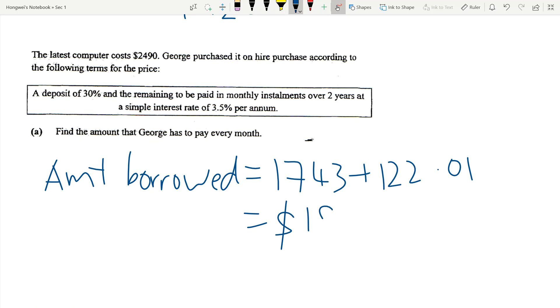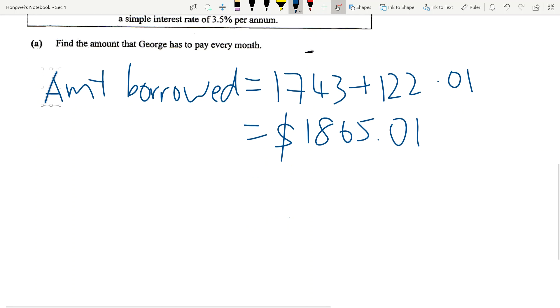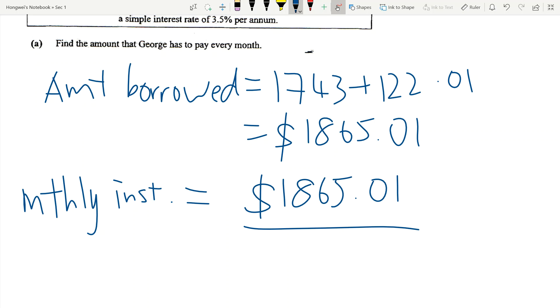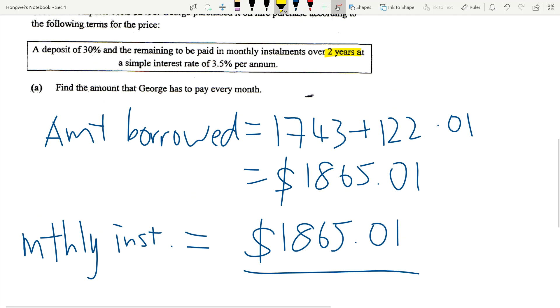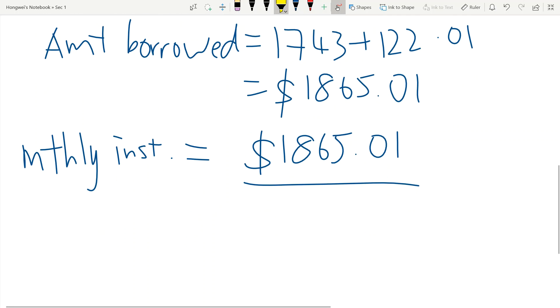Now what would be your monthly installment? So this is how you write monthly installment: equals the total you borrow, $1,865.01. They say it's to be paid over how long? It's to be paid over two years. So in two years, how many months are there? For the purpose of working, you can always do this: 2 times 12, because there's two years of 12 months.